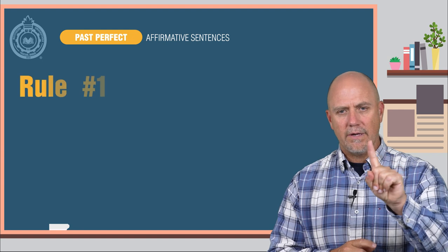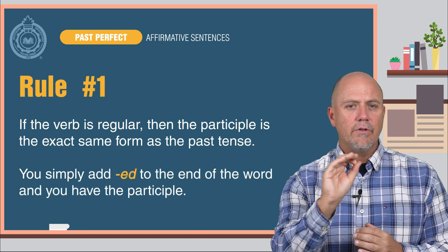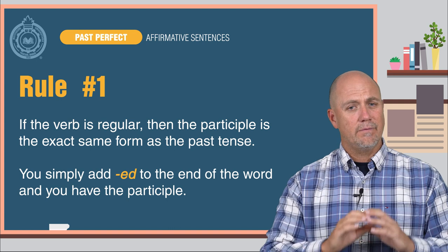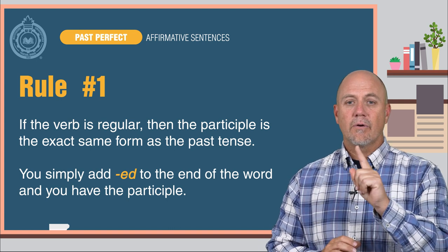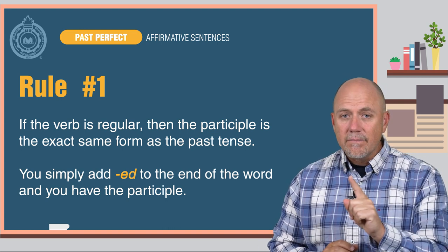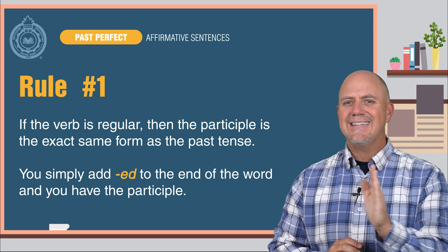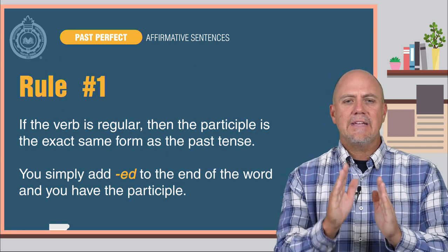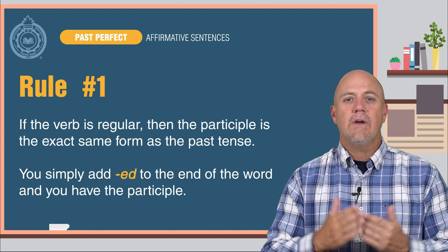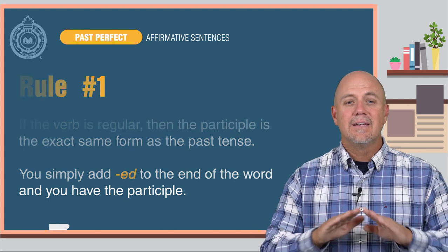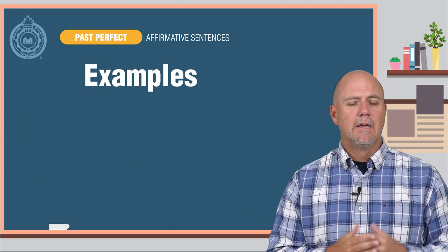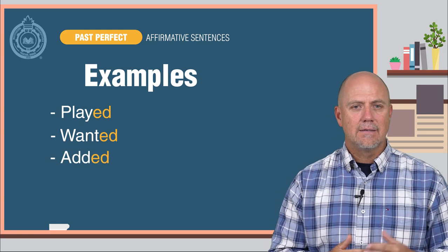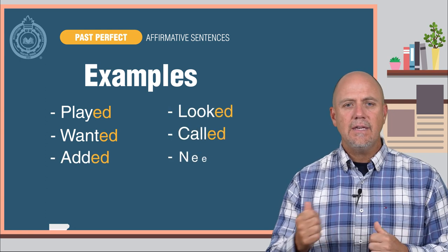Rule number one: you need to review the participle of all irregular verbs. If the verb is regular, then the participle is the exact same form as the past tense — you simply add -ed to the end of the word and you have the participle. Simple. For example: played, wanted, added, looked, called, needed.